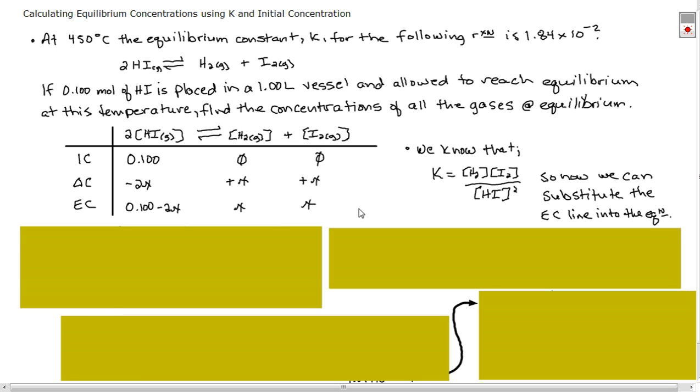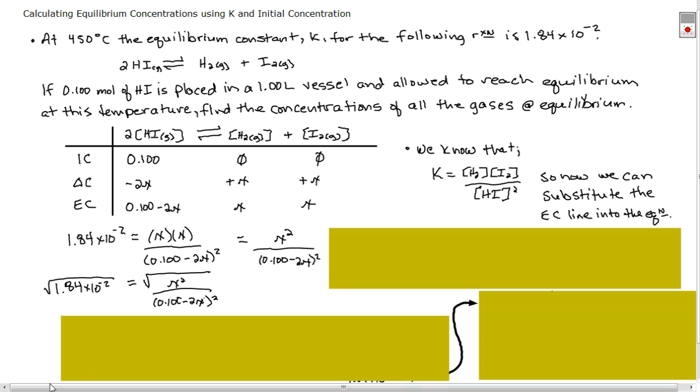We know that K is equal to the products over the reactants, and this is what our equilibrium law expression is going to look like. So now we can substitute the equilibrium concentration line into the equation. We plug that in for K, and our concentrations at equilibrium of our products are each x, so it's x times x. And this is our concentration of our reactant at equilibrium. And because there is a 2 in front there, like we see it's squared here, we need to put a squared there.